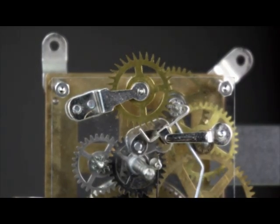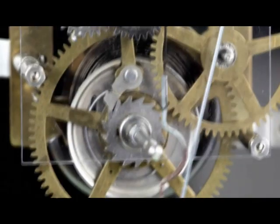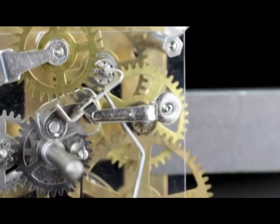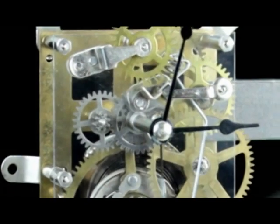The escape wheel controls how fast all the wheels in the wheel train turn. The gear ratios in the wheel train are selected so that one arbor somewhere in the clock turns exactly once per hour to display the time in minutes. That's where we put the big hand on the clock.